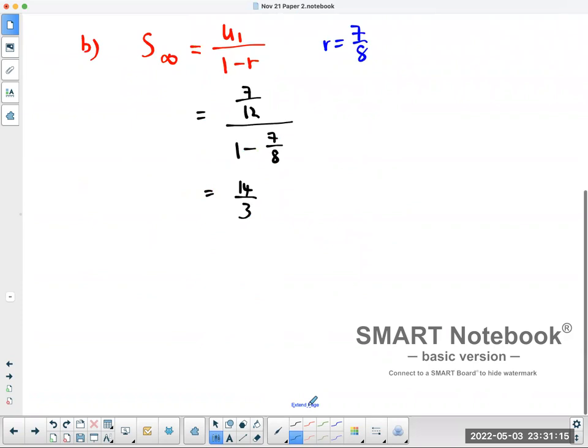The sum of n terms, we want this minus that is less than 0.001. This we already have is 14 over 3. This is the tricky part.